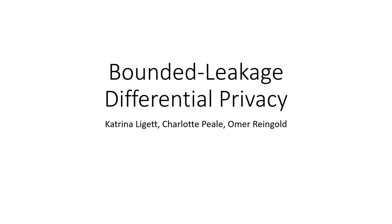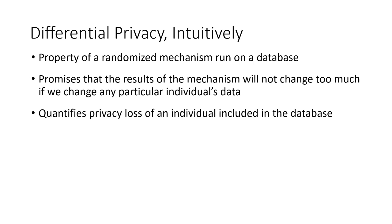Before I get into the definition of bounded leakage differential privacy, it's important to first take a quick review of differential privacy. Differential privacy is the property of a randomized mechanism that we run on some database. You can think of this randomized mechanism as a scientific study, and the database would contain data about the individuals participating in this study. What differential privacy promises is that releasing the results of the scientific study won't do too much to impact the privacy of the individuals included in this database.